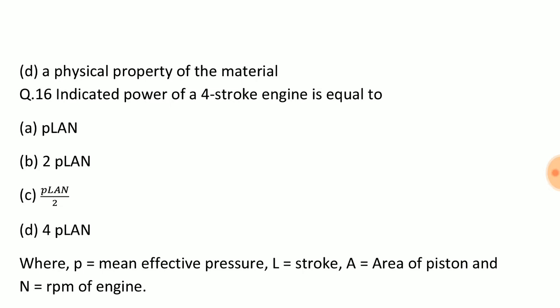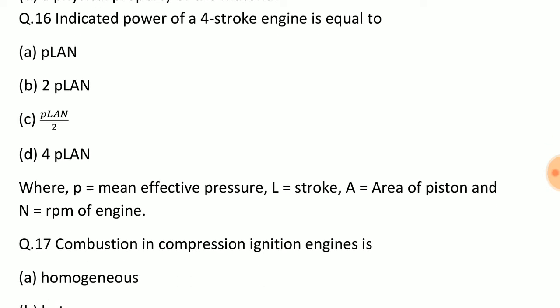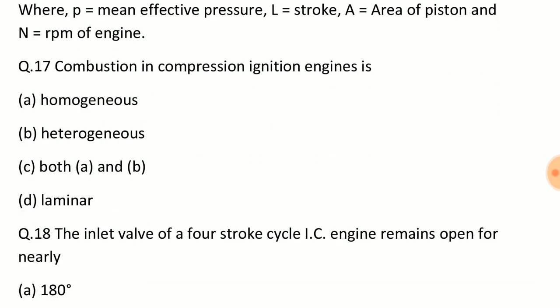Question: Indicated power of a four stroke engine is equal to? Answer: Option C, P L A N upon 2, where P equals mean effective pressure, L equals stroke, A equals area of piston, and N equals RPM of engine. Question: Combustion in compression ignition engines is? Answer: Option B, heterogeneous.